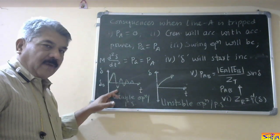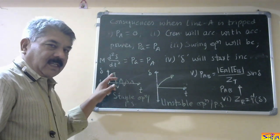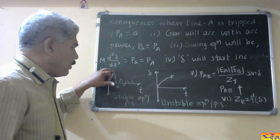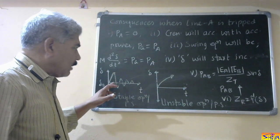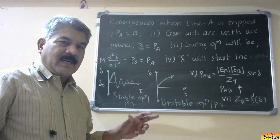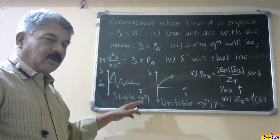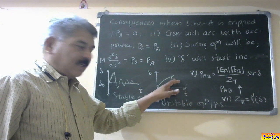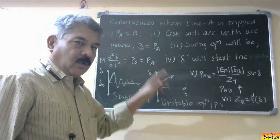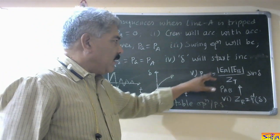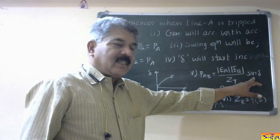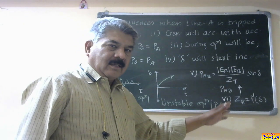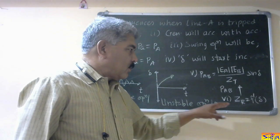If delta starts reducing after attaining some maximum value, it is stable operation or stable power swing. At the maximum point, d(delta)/dt is zero. So if in the swing curve — that is the delta versus time curve — at some point d(delta)/dt is zero, the system does not lose stability; it is stable power swing. The second case is if delta does not start reducing but continuously increases — that is unstable operation or unstable power swing. As delta increases, power flow PAB, which equals EA·EB/ZT·sin(delta), also increases. The impedance measured by the relay at both relays RA and RB is a function of delta during swing condition, so Zr will also change.